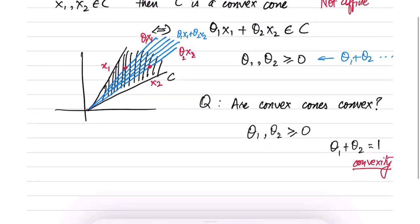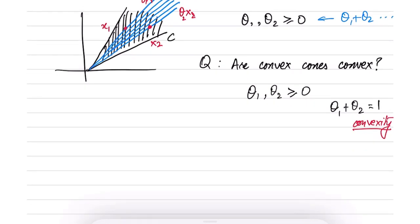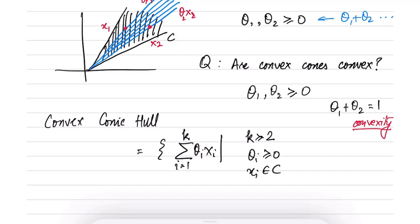In the same way as convex hull, we can also define the convex conic hull. So the convex conic hull is written as i equal to 1 to k, θi xi, for k greater than or equal to 2, θi greater than or equal to 0, xi belonging to C, and that's it.